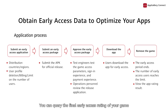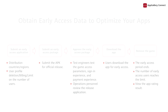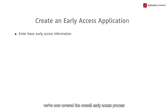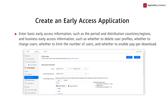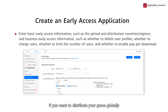You can query the final early access rating of your game. We've now covered the overall early access process. The early access time here matches the validity period set in your early access application. You can select all for countries and regions released if you want to distribute your game globally.